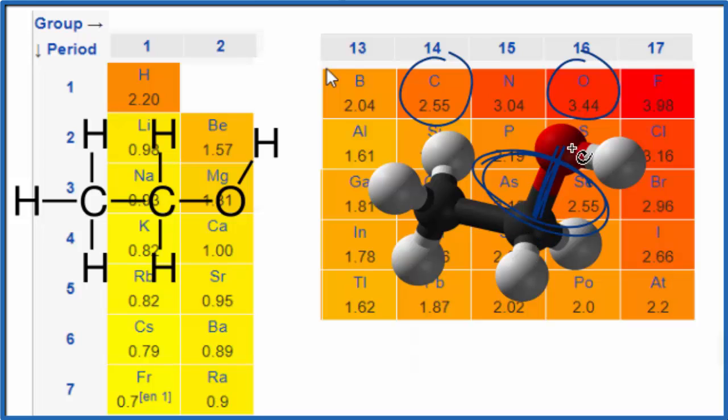For our oxygen atom and our hydrogen atom, the oxygen, that's 3.44, hydrogen, 2.20. So again, this will be a polar bond between these two atoms.